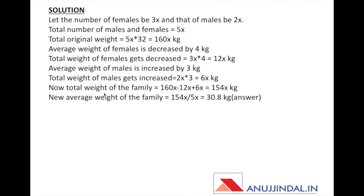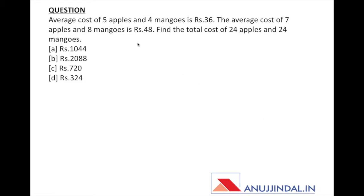Now the question asks for the new average weight of the family. We know the new total weight is 154x and the total number of members is 5x. So the new average equals total weight divided by number of members: 154x divided by 5x, which comes out to 30.8 kg. That's the answer to the first question.